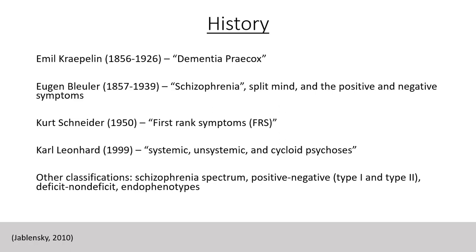While the unsystemic schizophrenias were considered to be primarily genetic, hereditary factors were thought to play a secondary role in the cycloid psychoses and the systematic schizophrenia, which were presumed to be exogenously determined — for instance, by maternal obstetric complications or early failure in social learning. Additional approaches to the classification of psychotic disorders are listed here as well.